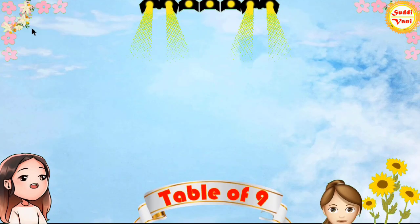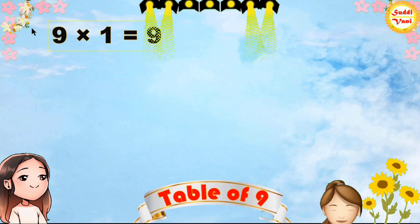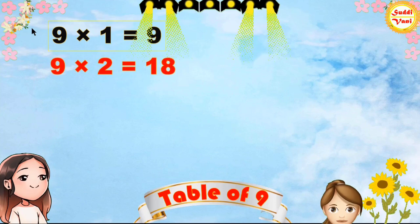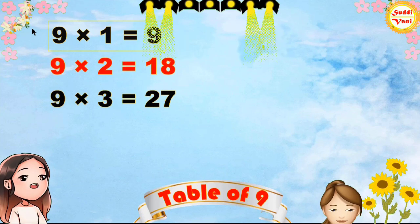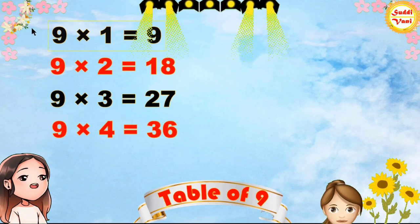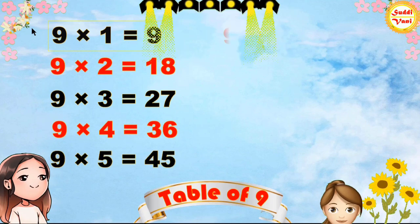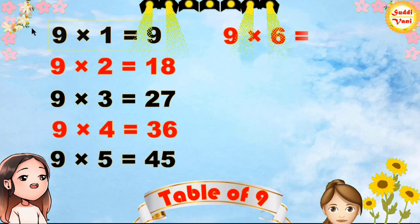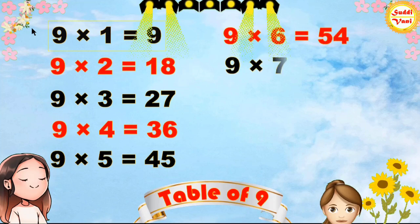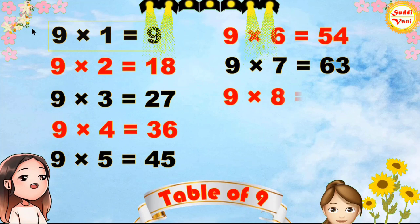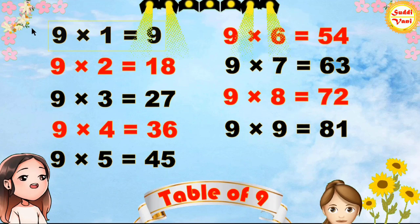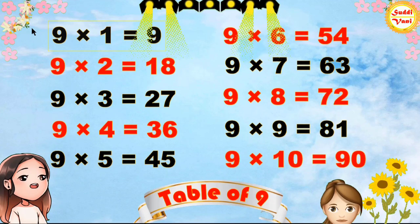Once again: 9×1=9, 9×2=18, 9×3=27, 9×4=36, 9×5=45, 9×6=54, 9×7=63, 9×8=72, 9×9=81, 9×10=90.